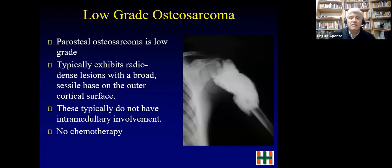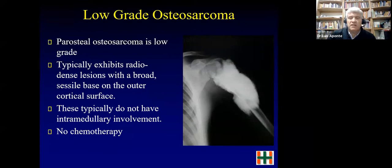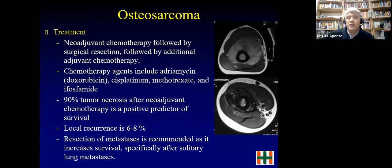Low-grade osteosarcoma is very rare in the upper limb — it is mainly found in the distal femur and never involves the intramedullary canal, and requires only resection without chemotherapy. For standard osteosarcoma, the treatment is neoadjuvant chemotherapy, then surgical resection, then adjuvant chemotherapy. Good response is defined as greater than 90% tumor necrosis; if achieved, we continue with the same chemotherapy regimen, which correlates with greater survival.